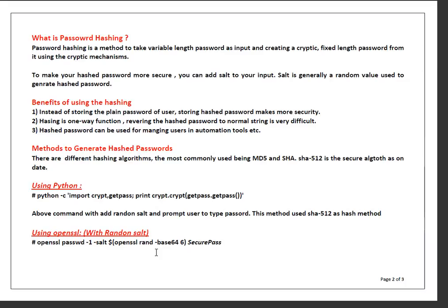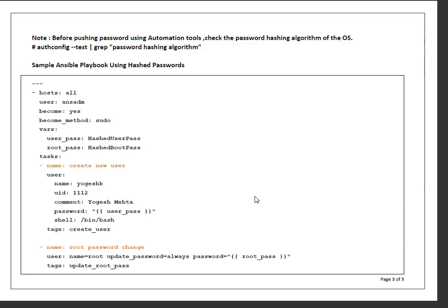One thing I want to tell you: with this Python command it will generate or use the SHA-512 algorithm, which is the strongest algorithm on Linux. If you want to check on your client or target operating system what the password hashing algorithm is, you can run the command 'authconfig --test' and grep for 'password hashing algorithm'. By default, most Linux distributions support SHA-512.